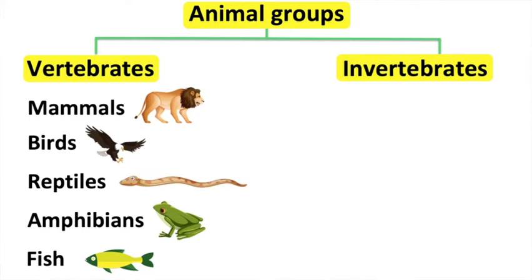Reptiles have scales. They use their lungs to breathe. Reptiles also lay eggs and their body temperature changes; therefore, they are cold-blooded animals. For example, a snake.